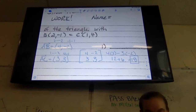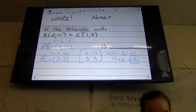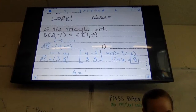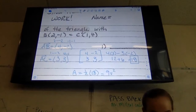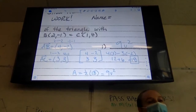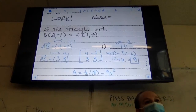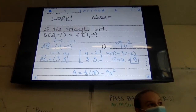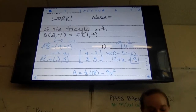We're still going to do one half. The determinant is 18. In order to really solve, we have to do one half of that. So area equals one half of 18. And what is one half of 18? 9.